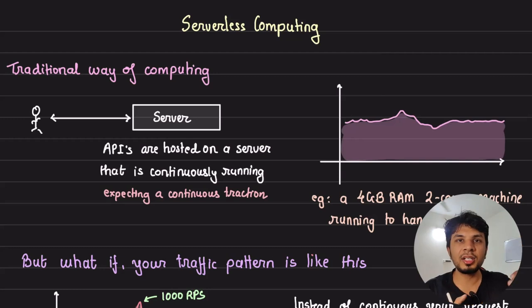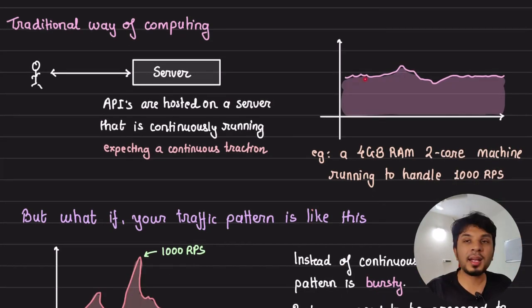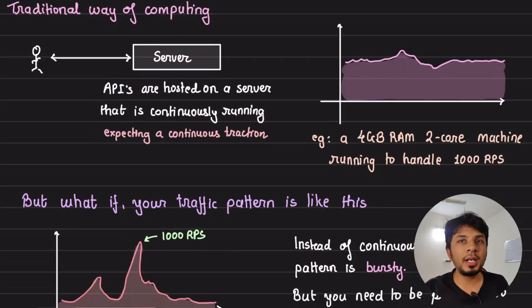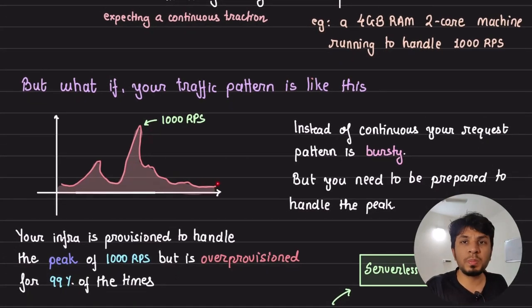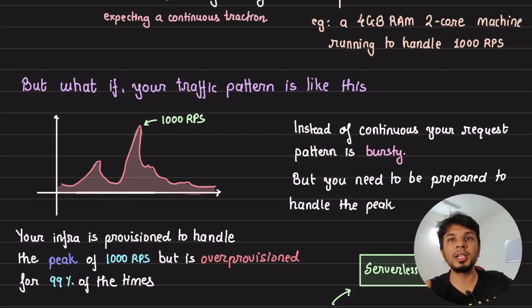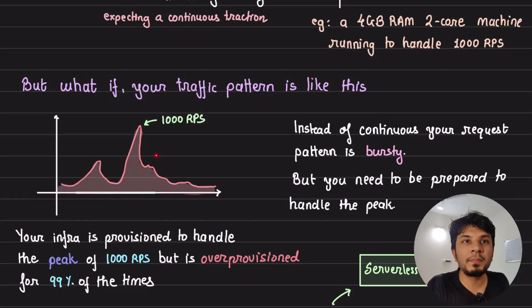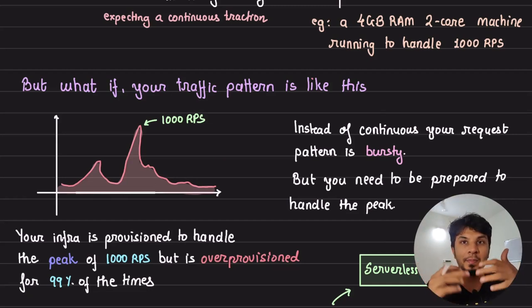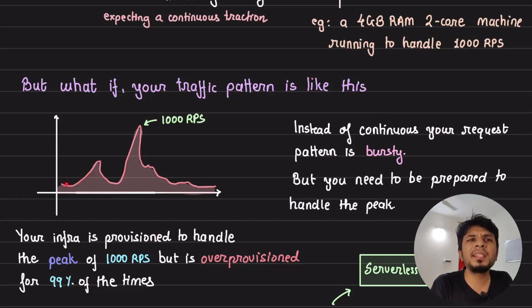Hypothetically, let's say we allocated 4 GB RAM and a dual-core CPU to a machine, and this configuration is enough to handle 1,000 requests per second. When you spin up a server, it is continuously running, provisioned to handle that steady load. But what if your traffic pattern is very spiky and bursty? That peak of 1,000 requests per second may only happen for 1% of your time.